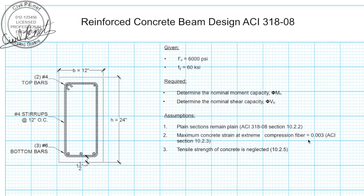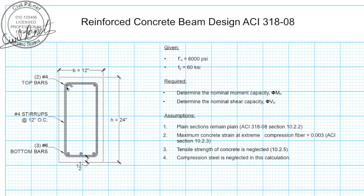In our section we're assuming that we're bending in a positive manner so the bottom goes into tension and the top goes into compression. We're assuming that at failure the extreme compressive fiber goes into compression at a strain of 0.003. Our next assumption is that the tensile strength of the concrete is completely neglected — ACI dictates this. Concrete does have some tensile strength but it's not very much, so any concrete in tension is assumed to be cracked and has no strength. Finally, we're assuming that the steel in the compression zone is neglected.